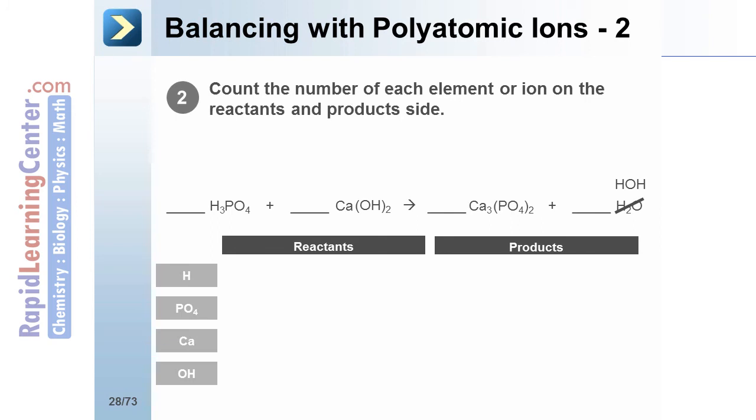Count the number of each element or ion on the reactants and product side. Remember not to count the hydrogen in the OH polyatomic ion as it will be counted later. The 4 in PO4 is a part of the polyatomic ion and is not used to count atoms. However, the 2 outside of the parentheses is used to count polyatomic ions.